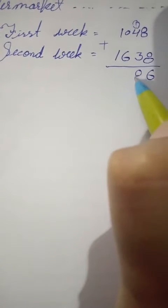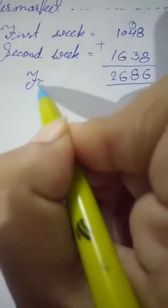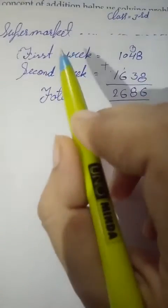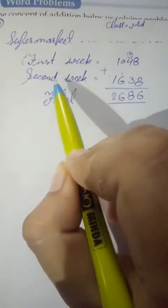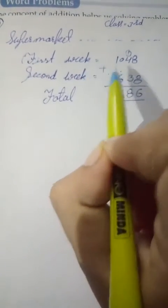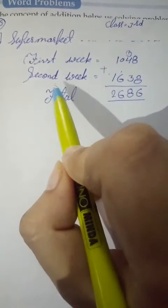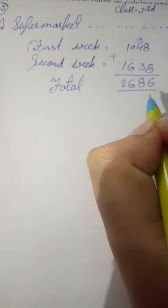Now add the numbers. 8 plus 8 is 16, transfer the carry 1. 4 plus 1 is 5, plus 3 is 8. 0 plus 6 is 6. 1 plus 1 is 2. So the total is two thousand six hundred and eighty-six.